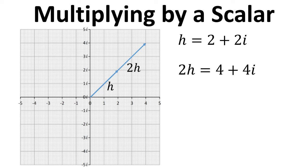And we can see that if we multiply h by 2 for the complex number, 2 times 2 is 4, 2i times 2 is 4i. So again we can see how the complex numbers can be used to help solve this problem.